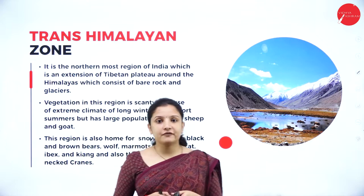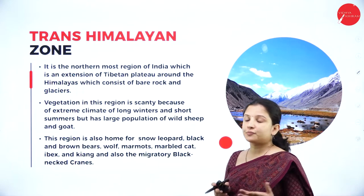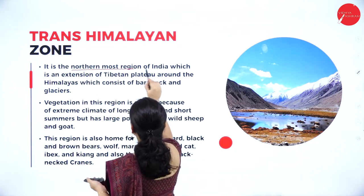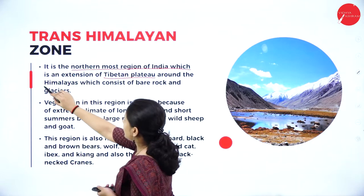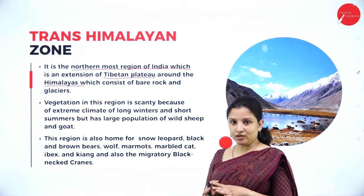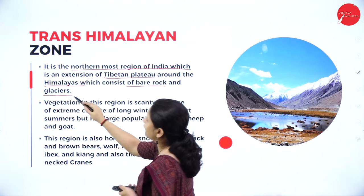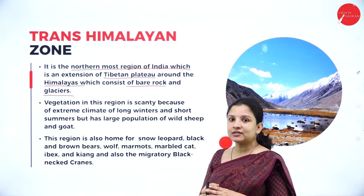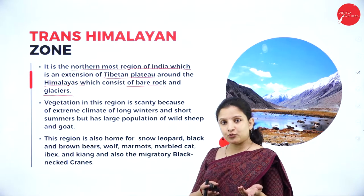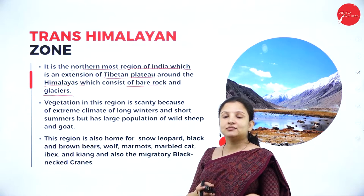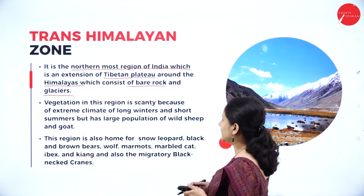The first is the Trans-Himalayan zone, present in the northernmost part of India. This region, which is an extension of the Tibetan Plateau surrounding the Himalayas, forms the Trans-Himalayan zone. This zone is quite rocky, made up of bare rock and glaciers, and therefore vegetation is very poor in this region. If vegetation is poor, herbivorous animals will be scarce, and likewise carnivorous animals will be completely absent.